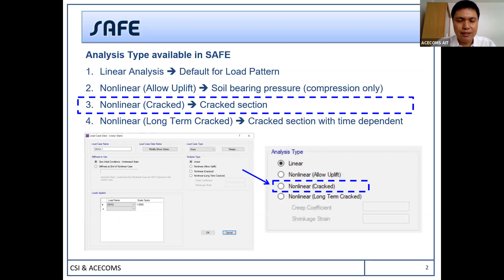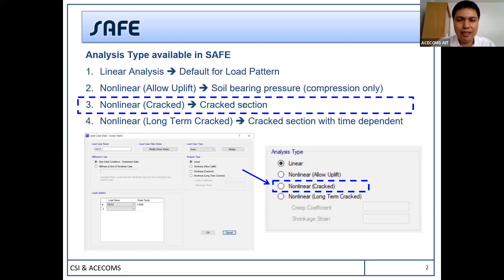There are four types. Linear crack-section is normal — every time you apply load, the default will be linear crack-section. The second one is non-linear allow uplift, which is for the foundation space footing without the pile, which I already explained in a previous session. Today I'm going to talk about non-linear crack-section analysis, and the last one will be non-linear crack-section with long-term, which I may explain in the next session.